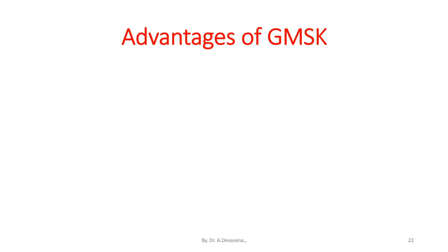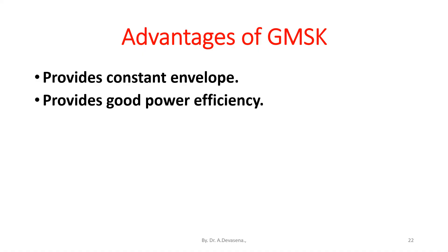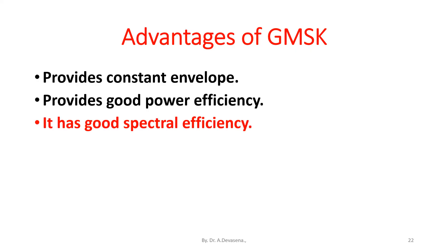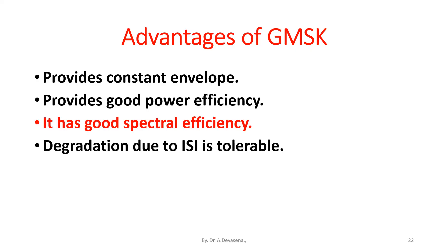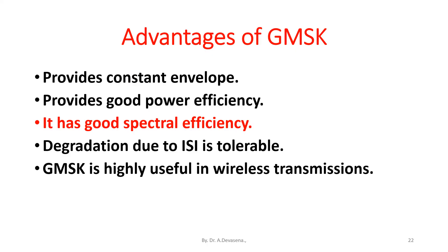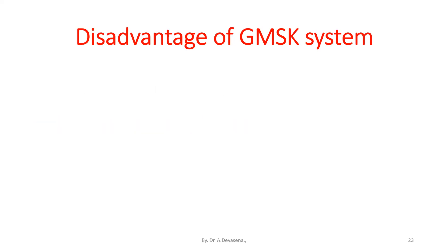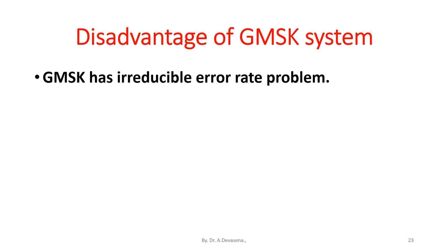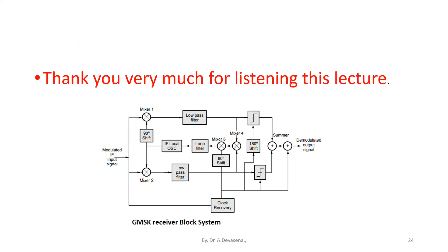Advantages of GMSK: GMSK provides constant envelope, good power efficiency, good spectral efficiency, and degradation due to ISI is tolerable. GMSK is highly useful in wireless transmissions. Disadvantage of GMSK: GMSK has an irreducible error rate problem. Thank you very much for listening to this lecture; for further updates, kindly subscribe to this channel.